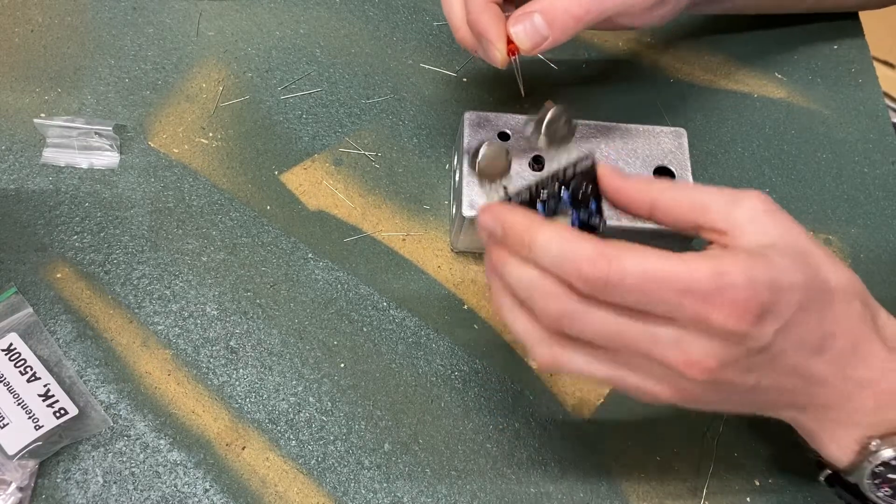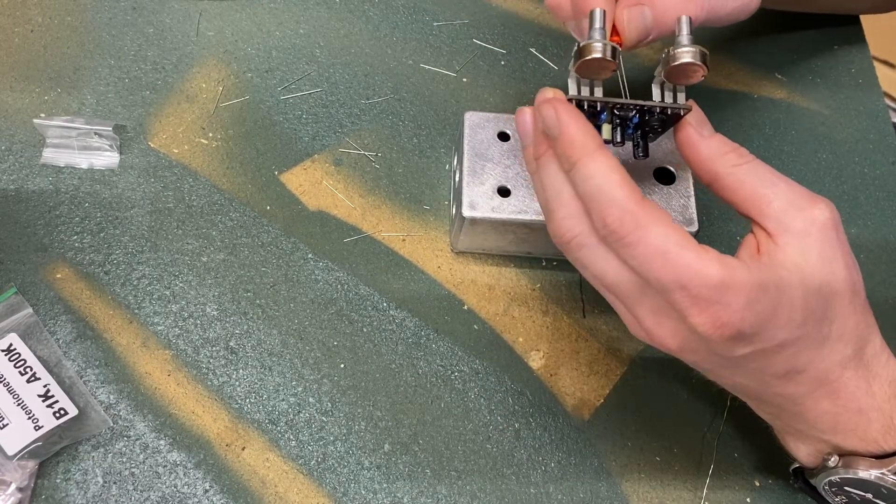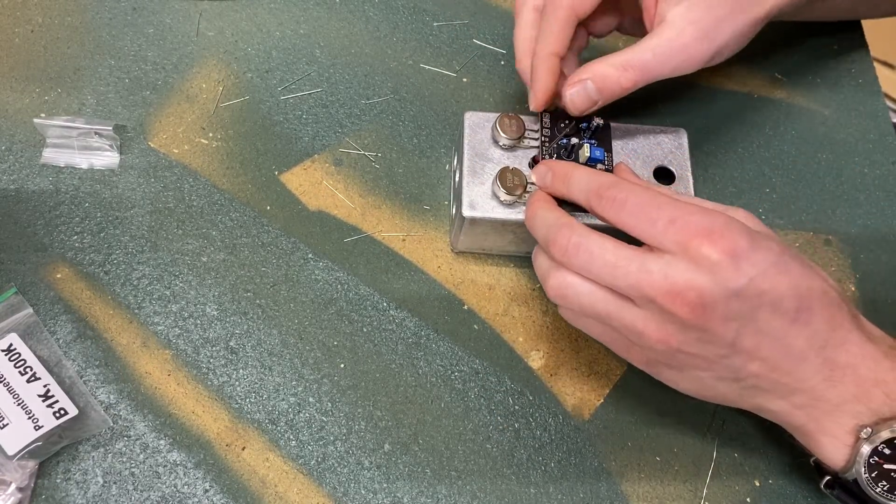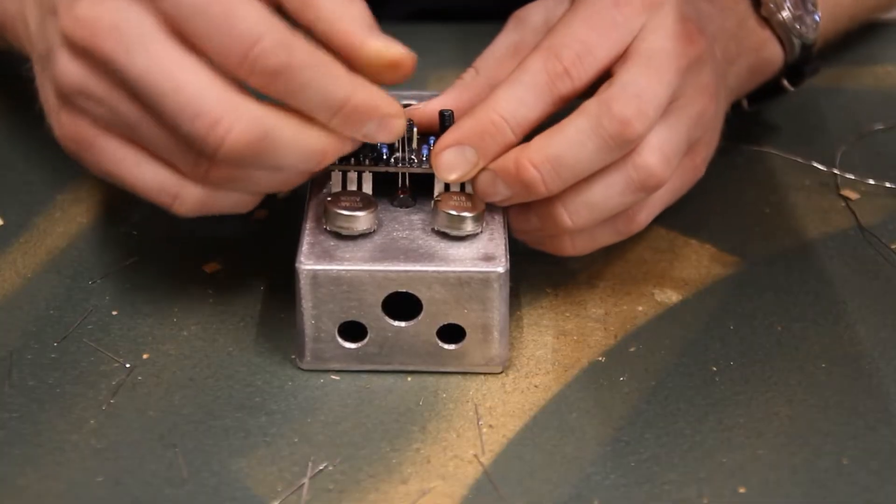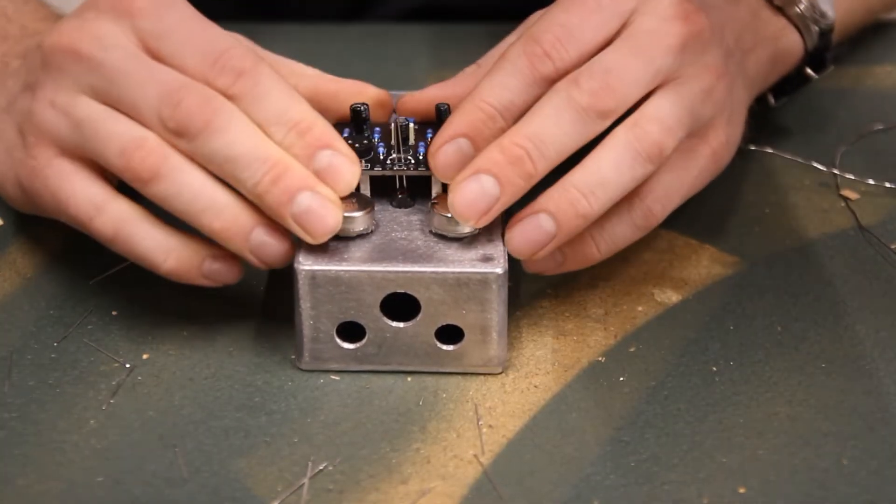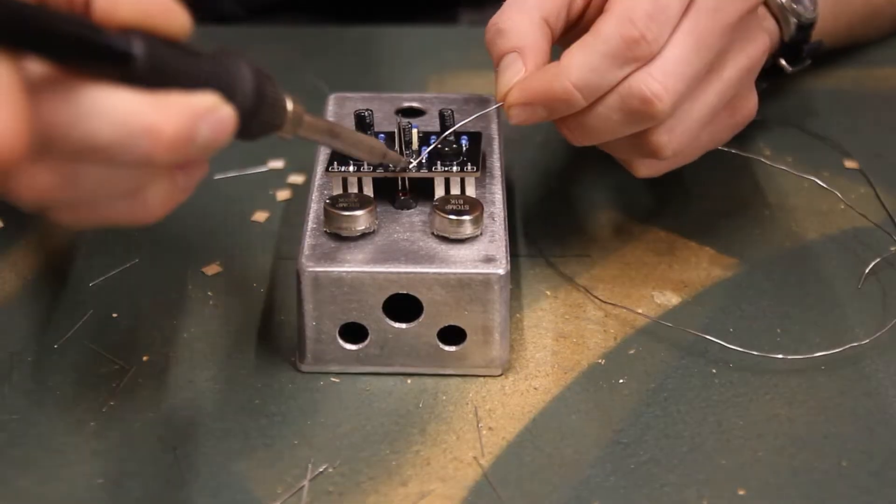Insert the LED into the PCB and double check your polarity. Mount the assembly into the top of the board and push the LED down into the bezel as far as it will go. Now you can solder in the pots and the LED.